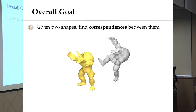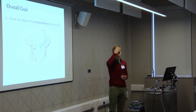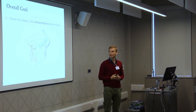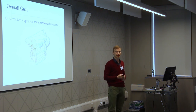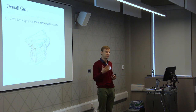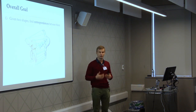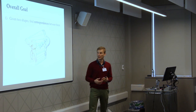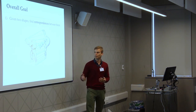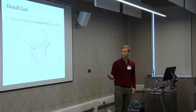The overall goal of shape matching is: we have a pair of shapes and our goal is to find correspondences between them. Intuitively for us as humans it's very easy to say the tip of the ear on this armadillo on the left corresponds to the tip of the ear on the armadillo on the right. But the difficulty is to explain what we mean by correct correspondence — purely by looking at the geometry without any semantic information.